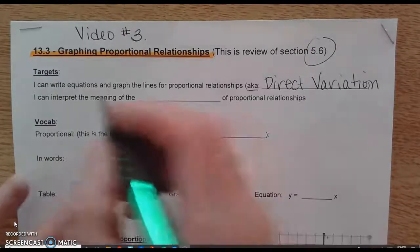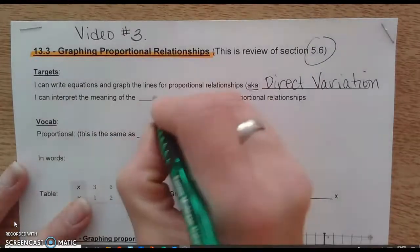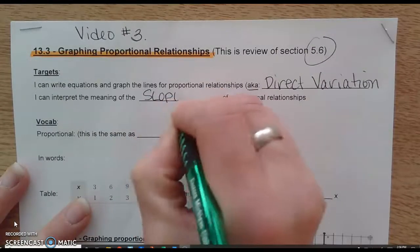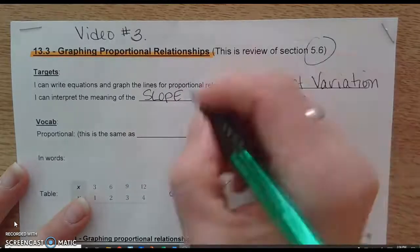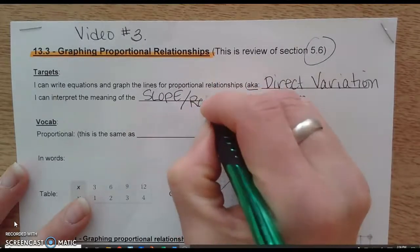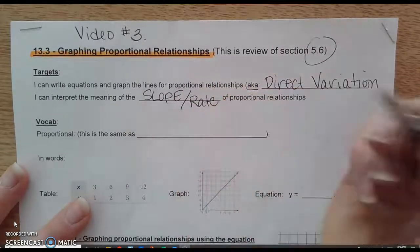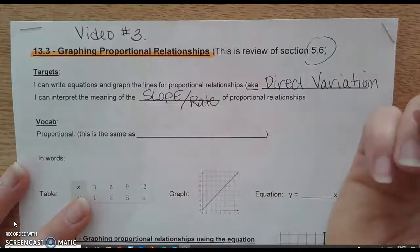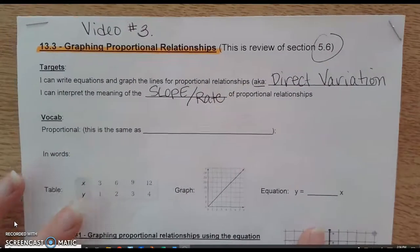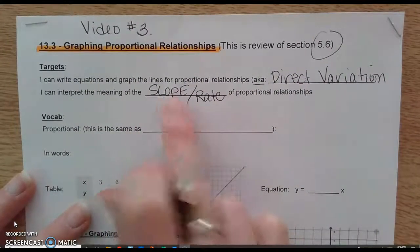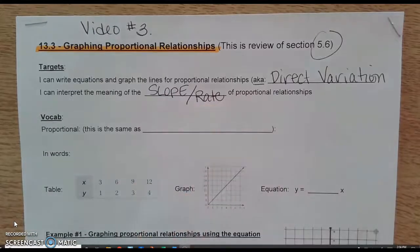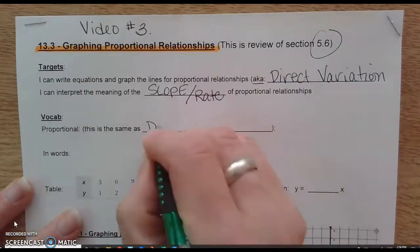We can also interpret the meaning of the slope of those relationships, which is also the same as the rate. We're going to be talking about and answering questions about the slope or the rate. So proportional relationships are the same as direct variation.